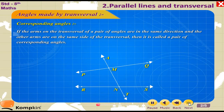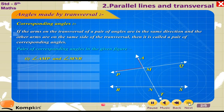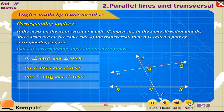Corresponding angles. If the arms on the transversal of a pair of angles are in the same direction, and the other arms are on the same side of the transversal, then it is called a pair of corresponding angles. Pairs of corresponding angles in the given figure are shown accordingly.